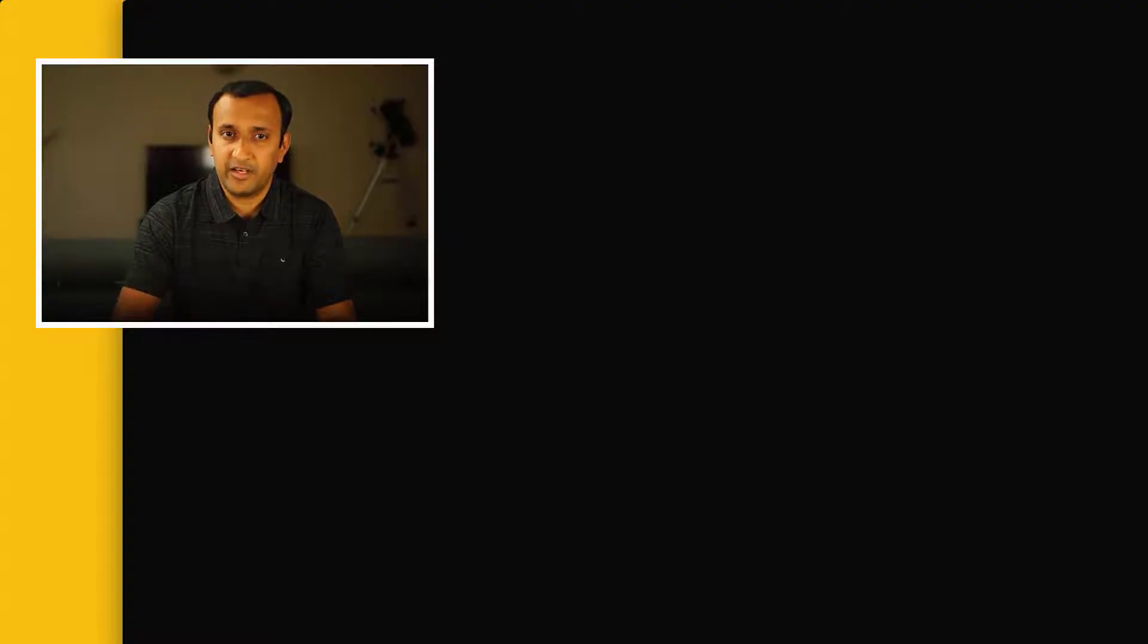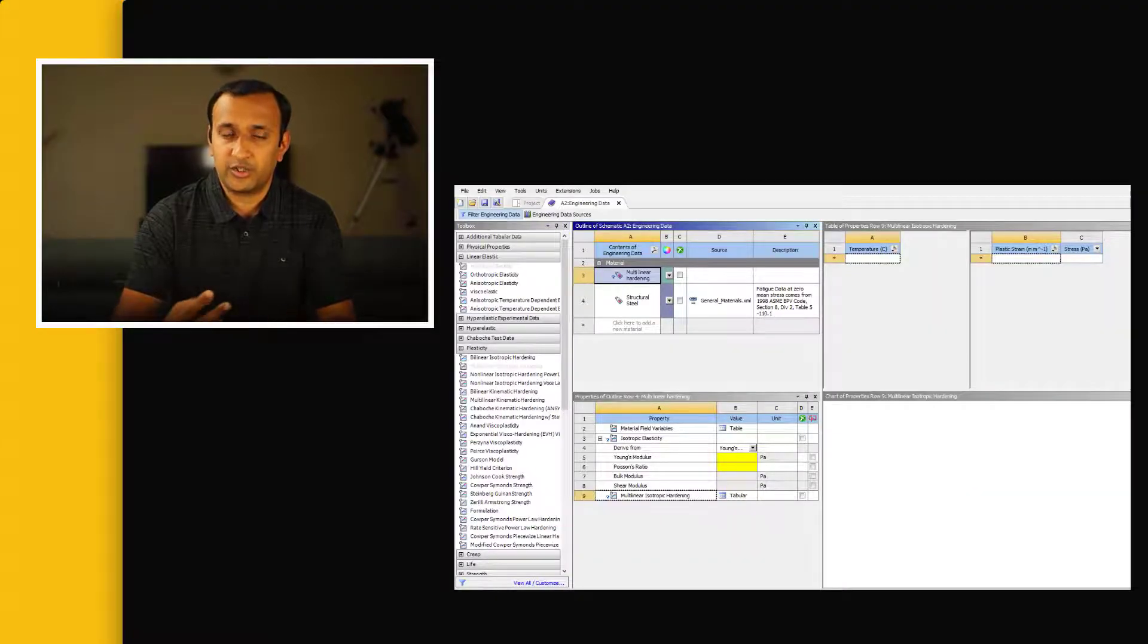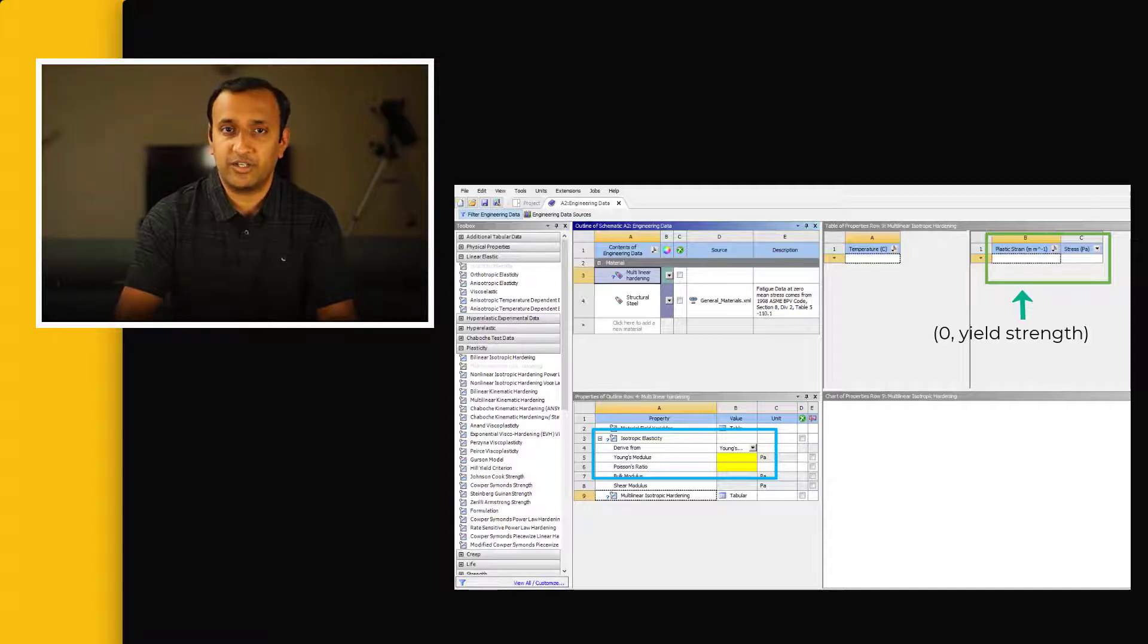To define this behavior, we need to provide two sets of inputs: linear elastic behavior, which is defined by Young's modulus and Poisson's ratio, and multilinear hardening, which is defined by the plastic strain versus true stress, where the first data point indicates the onset of plastic deformation, which is zero, yield strength.